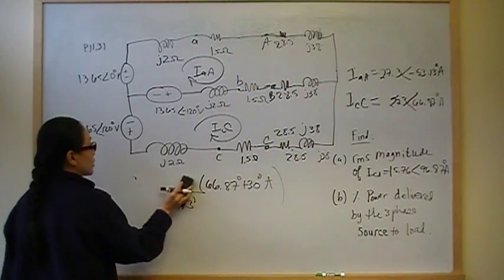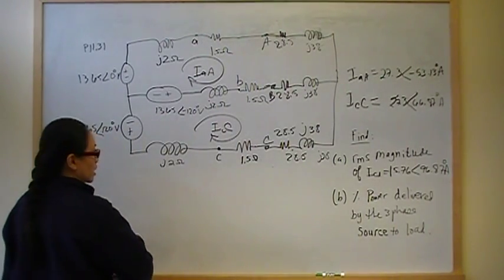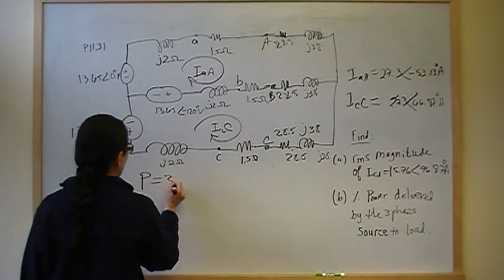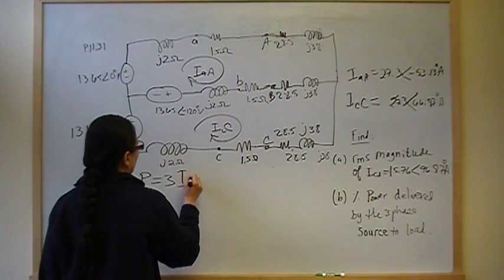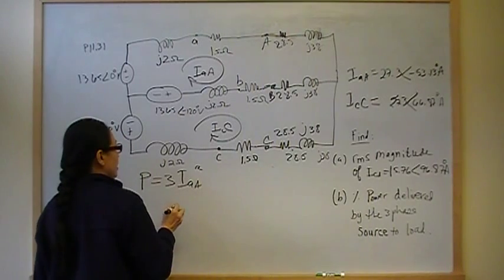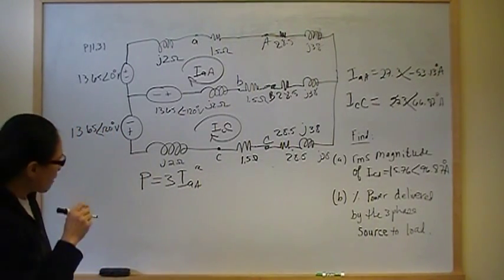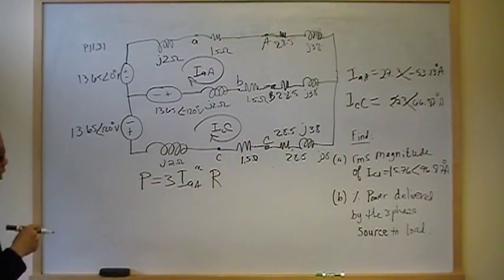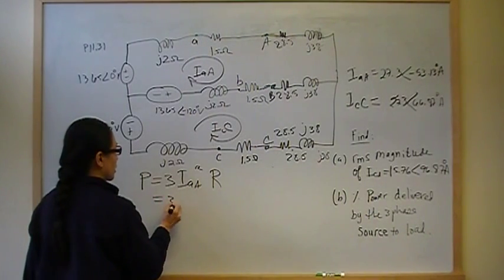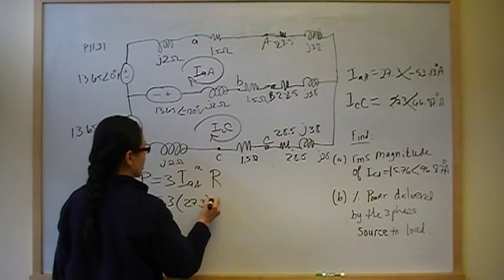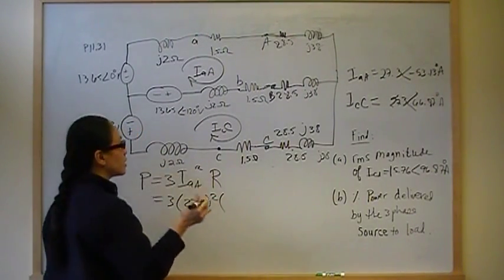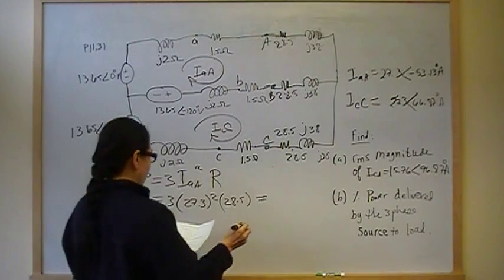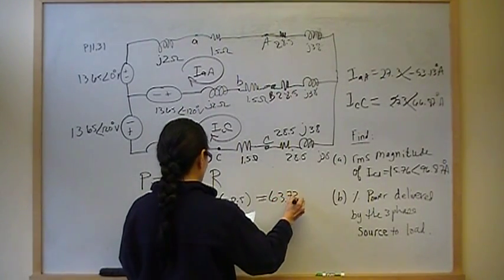For part B, total power dissipated. Well, power dissipated by the three-phase load is just three times the IAA squared, the magnitude of the current squared, times the load, the real part of the load. And that's going to give you three times 27.3 squared, and the real resistance part of the impedance is 28.5. This gives you power dissipated of 63.72 kilowatts.